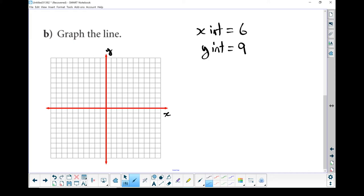That's my y-axis. My x-intercept, it crosses at 6. So it crosses right there. My y-intercept crosses at 9. So it's up there.